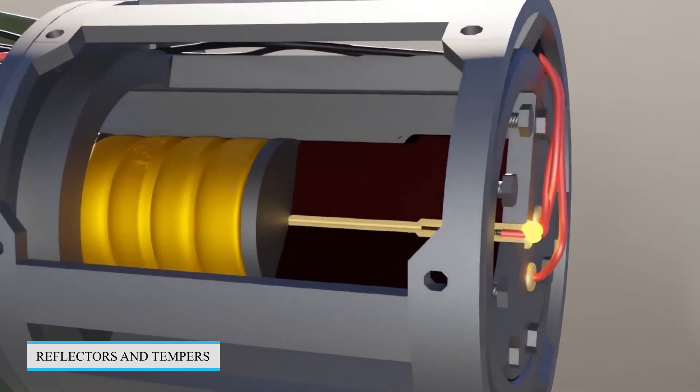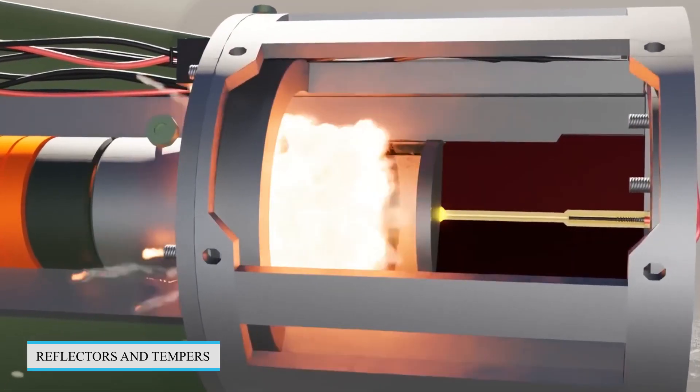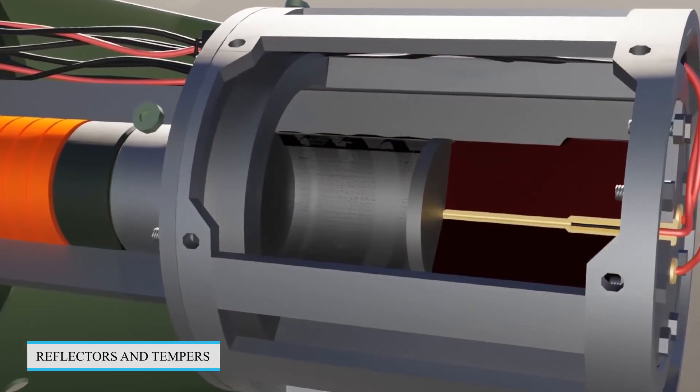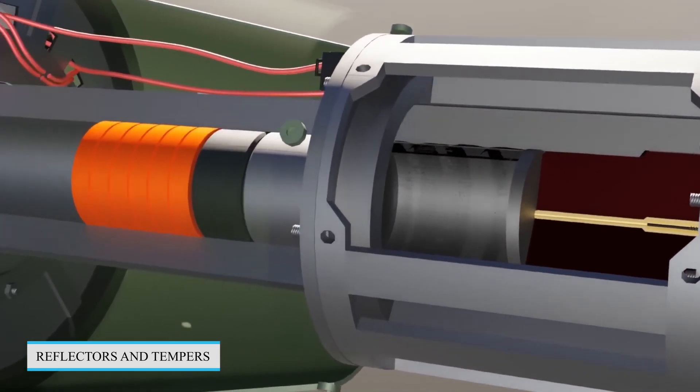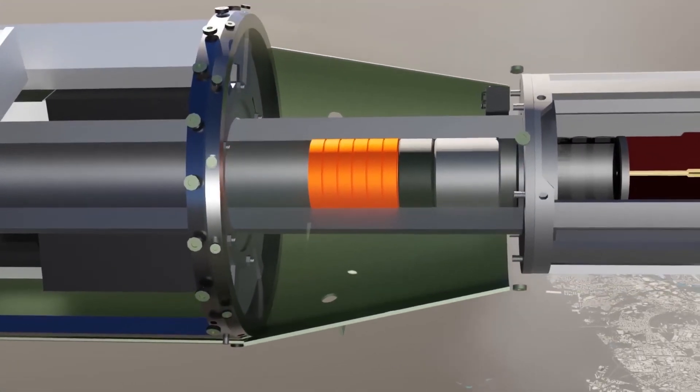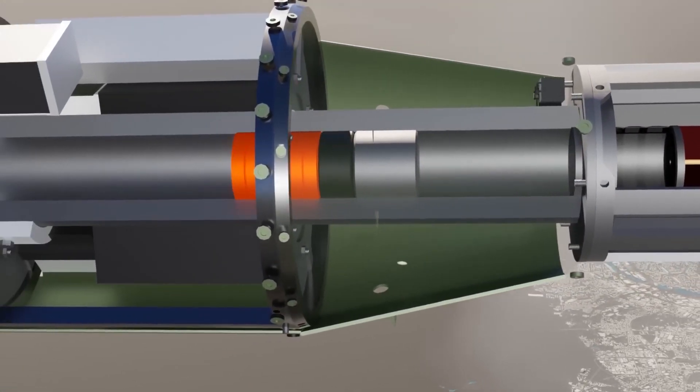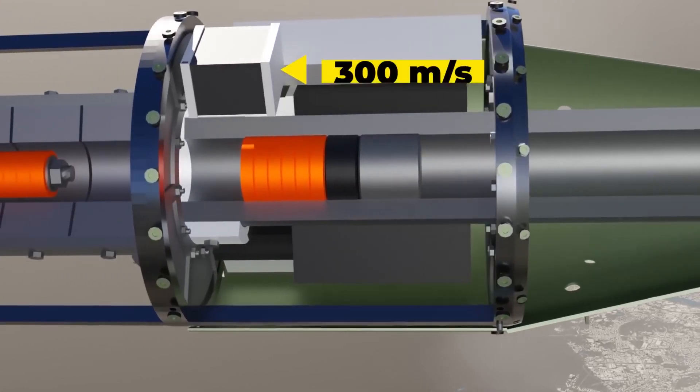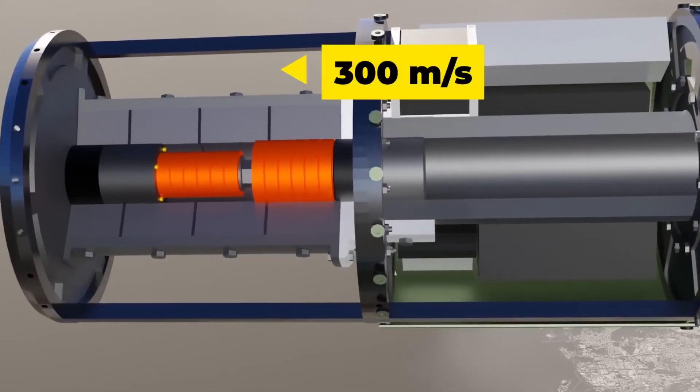Five, reflectors and tamper. Some nuclear bombs incorporate reflectors and tampers, which are materials that help reflect escaping neutrons back into the fissile core. This enhances the efficiency of the chain reaction and increases the yield of the explosion.